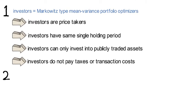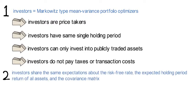The second assumption for the CAPM is that all investors share the same homogeneous expectations about the risk-free rate, the expected holding period return of all assets µ, and the covariance matrix of returns, capital sigma.